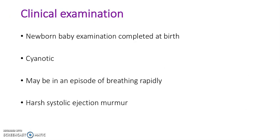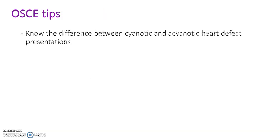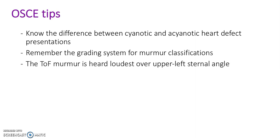What would we see in a clinical examination? While a newborn baby examination is completed at birth, the baby may be cyanotic, they may have episodes of breathing rapidly, and you may hear a harsh systolic ejection murmur. Here are some tips for the OSCE: know the difference between a cyanotic and an acyanotic heart defect presentation. Remember the grading system for murmur classifications. The tetralogy of Fallot murmur is heard loudest over the upper left sternal angle.